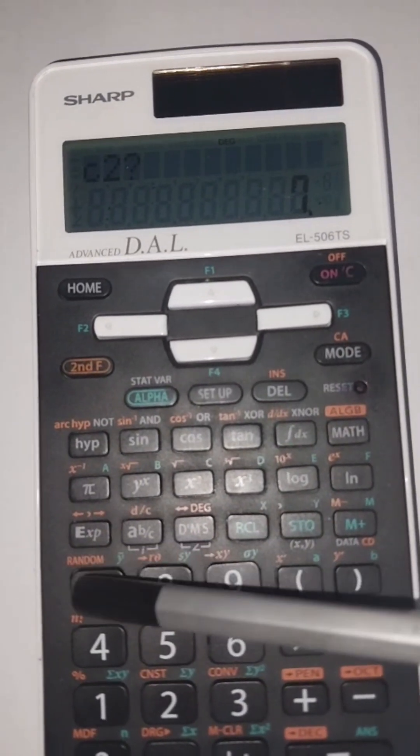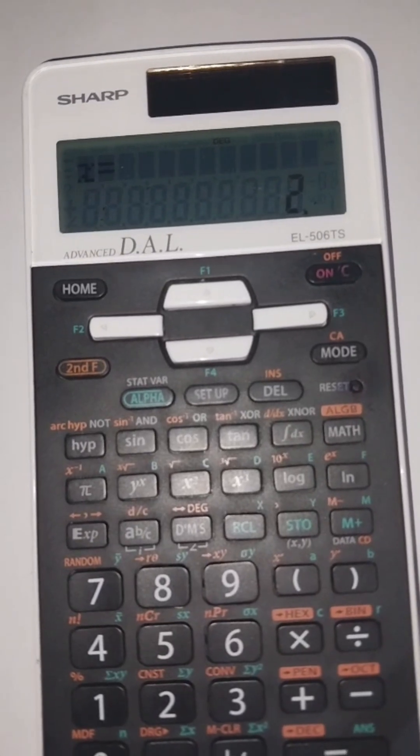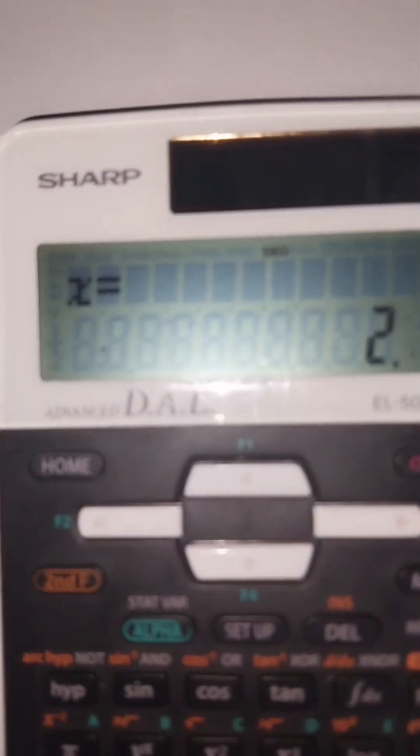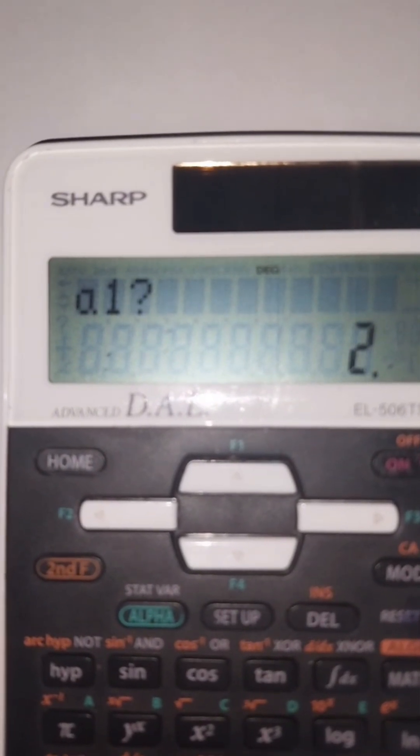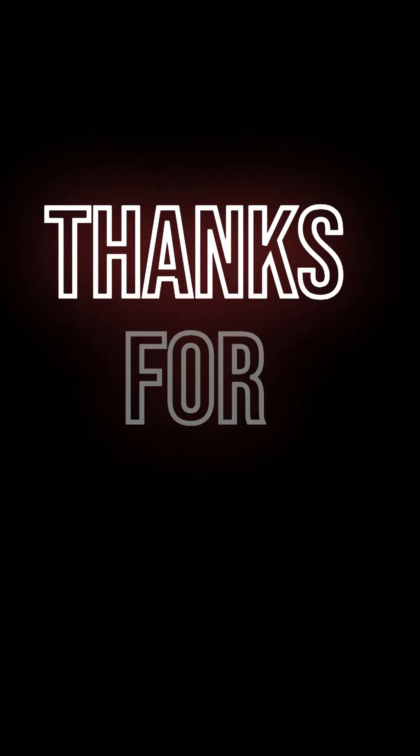And these are your answers. x equals 2, y equals 3, and the determinant is minus 4. The determinant is extremely useful if you're solving simultaneous equations using the matrix method. Thanks for watching.